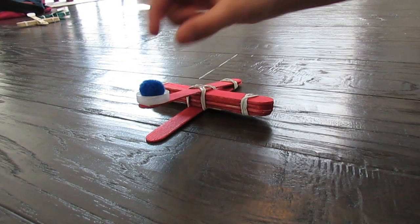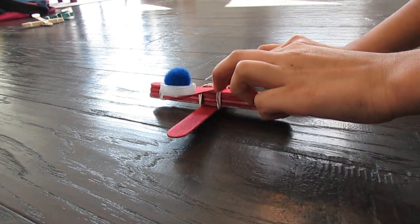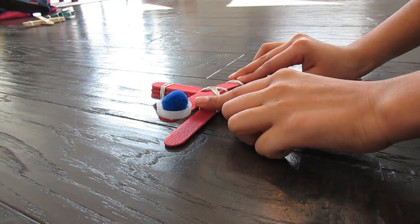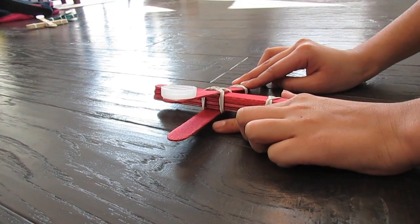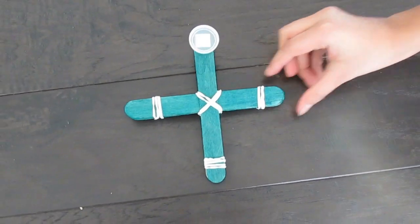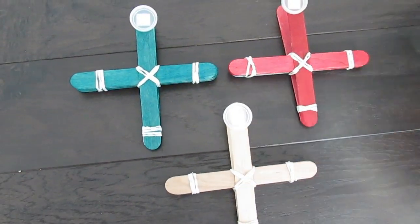Hold the catapult with one hand and use your other hand to pull down on the lever. Release the lever to watch the pom-pom launch. Try building the catapult with more popsicle sticks and have fun.